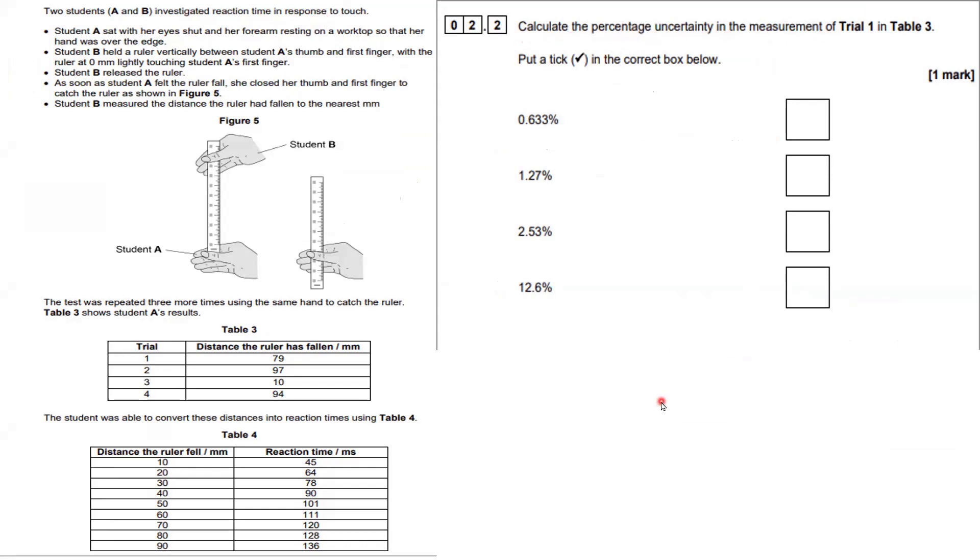Okay guys, looking at a percentage uncertainty question here. It's a multiple choice, 2.2 on the paper 3, 2022 AQA A-level biology. Let's get into it.